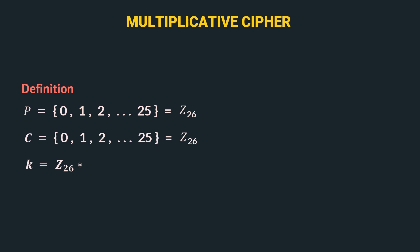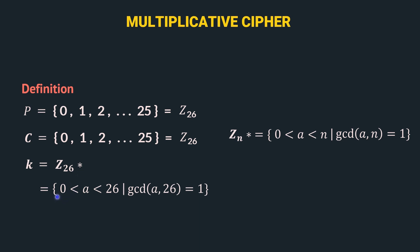In multiplicative cipher, the key domain is Z26 star. Zn star contains integers from 0 to n such that the GCD of a and n is 1 — strictly greater than 0 and strictly less than n. Applying this to Z26 star, the integers satisfying these conditions are 1, 3, 5, 7, 9, 11, 15, 17, 19, 21, 23, 25 — the odd integers from 1 to 25 apart from 13, because GCD of 13 and 26 is 13, not 1. This is the key domain of a multiplicative cipher.